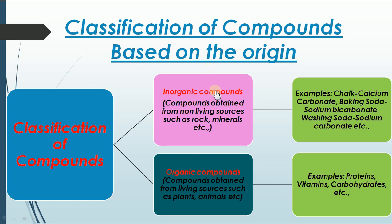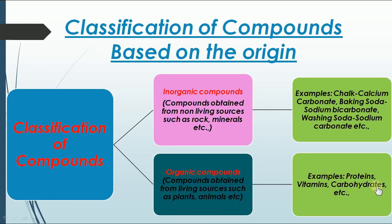Examples of inorganic compounds include chalk, calcium chloride, baking soda (sodium bicarbonate), and washing soda (sodium carbonate). For organic compounds, examples include proteins, vitamins, and carbohydrates.